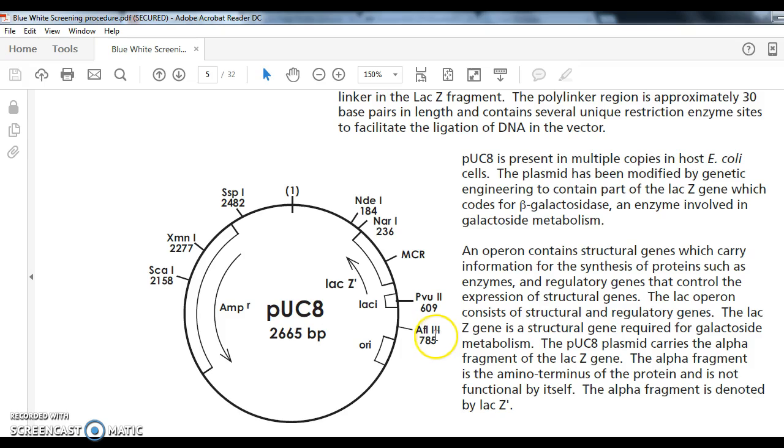all of these abbreviations on the outside are representing restriction enzyme cut sites. So if we, for example, were going to cut with SCA1, it would cut right here. And if we were to cut with AFL3, it would cut right here. If we did the math and subtracted 2158 from 785, that is how long this piece of DNA would be. Anytime you do any restriction mapping, it needs to add up to what the total plasmid number is, 2665.